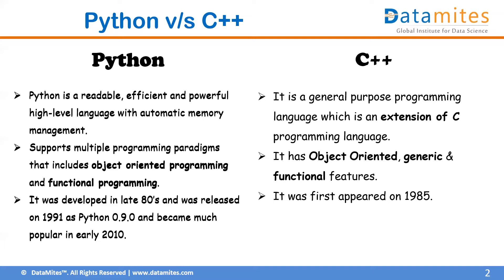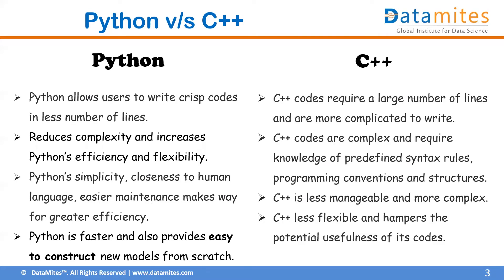Now let's view these languages from the perspective of data science and machine learning. Python allows users to write crisp code in fewer lines because it uses common English terminologies as syntax. Python does not have a fixed structure compared to C++. In C++, you must include libraries or header files and preprocessors, then define a main function, and inside that perform all the computation — there is a mandatory structure to follow.